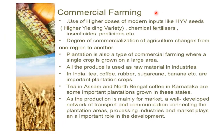Commercial farming is further of two types: one is grain farming and another is plantation farming. In grain farming, high doses of modern inputs like HYV seeds, chemical fertilizers, insecticides, and pesticides are used to increase production. The degree of commercialization of agriculture changes from one region to another depending on the geographical conditions of the area.